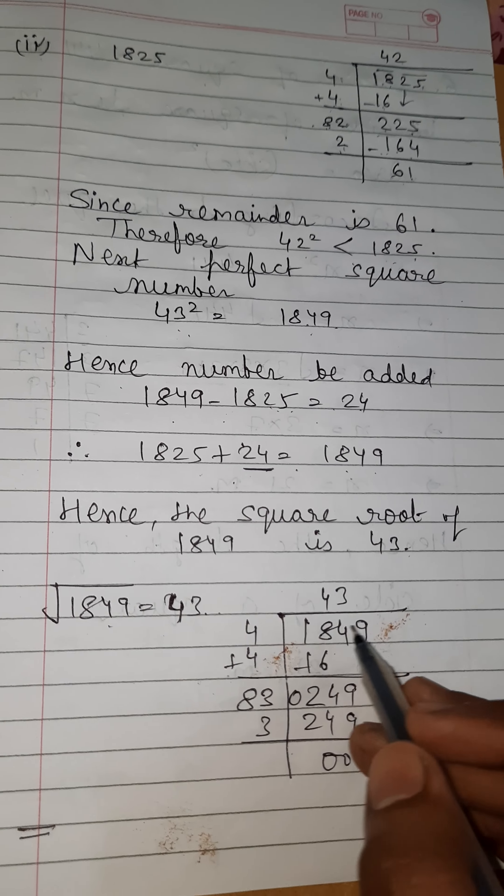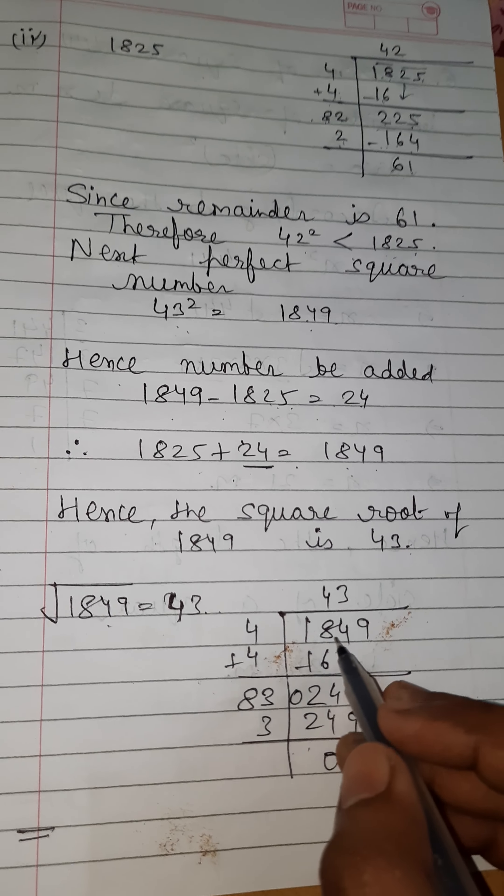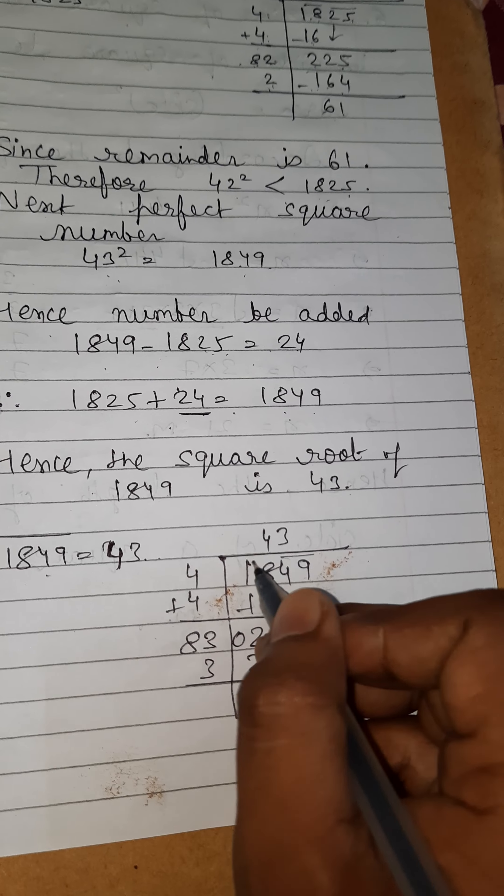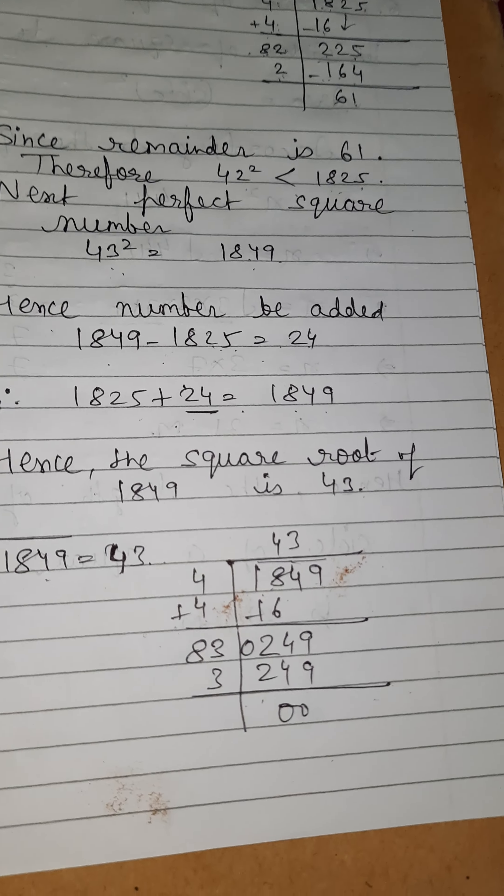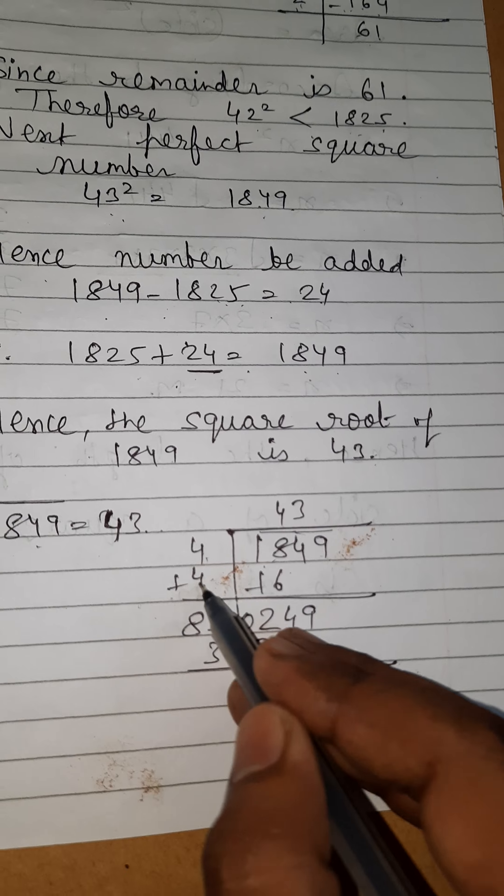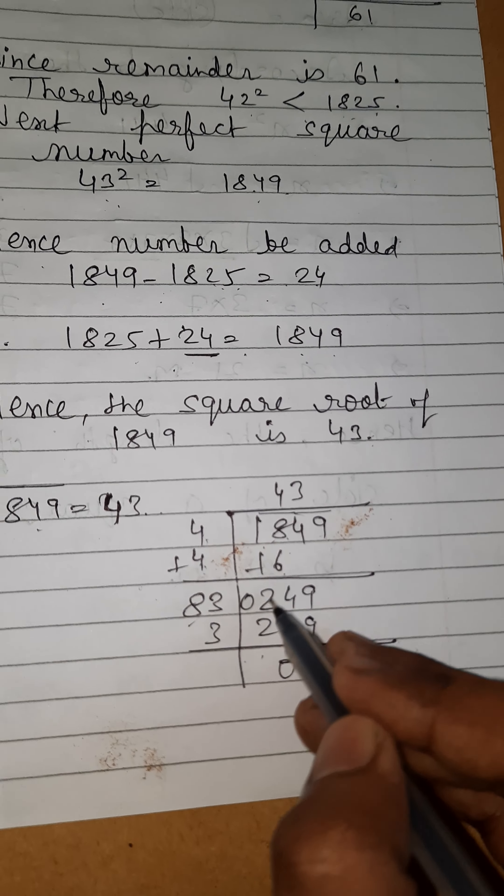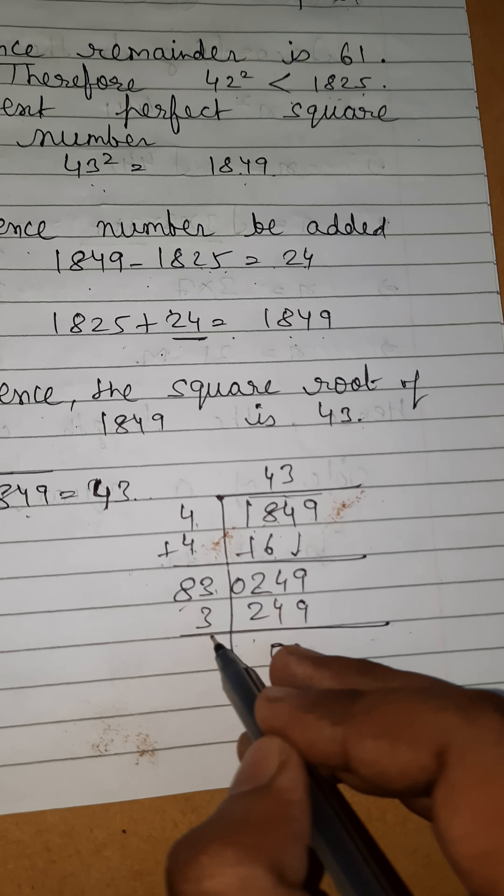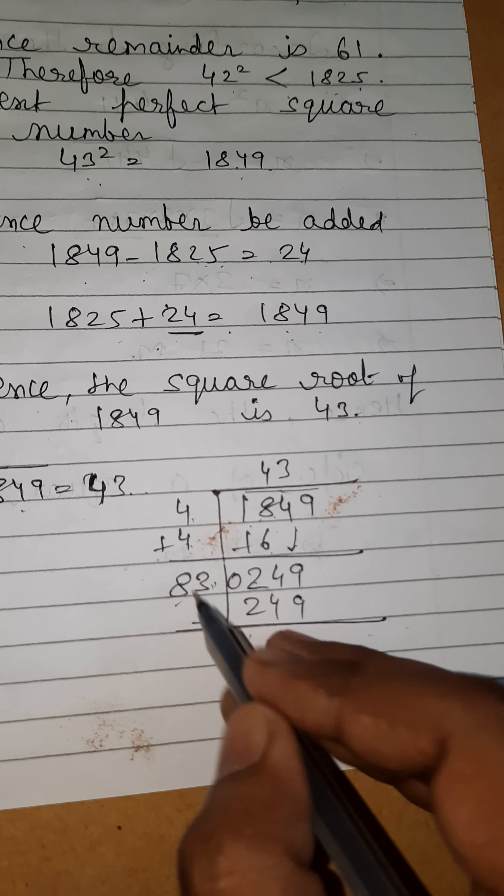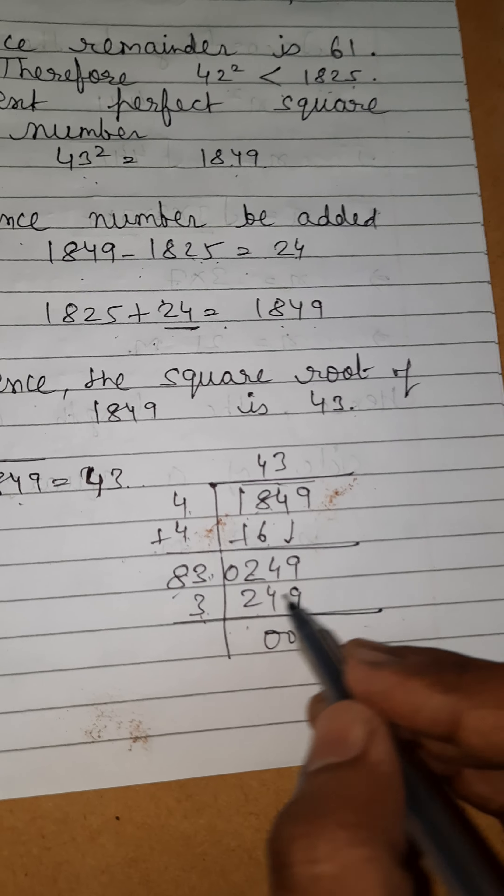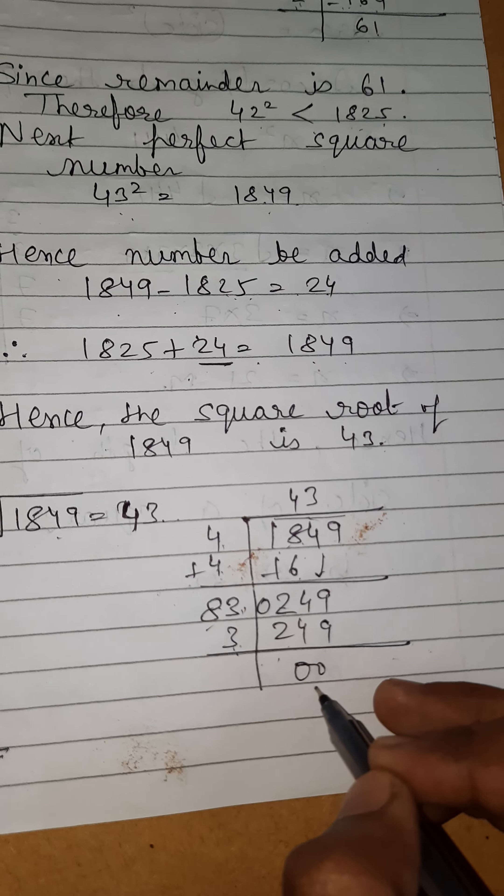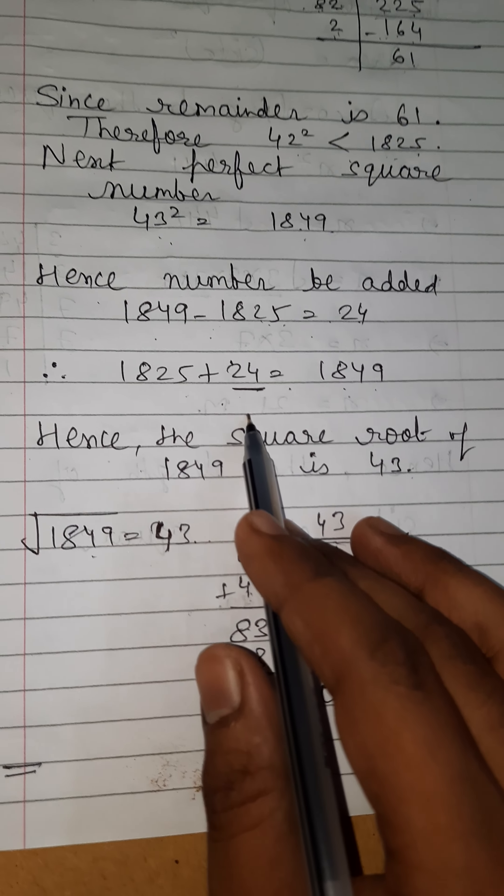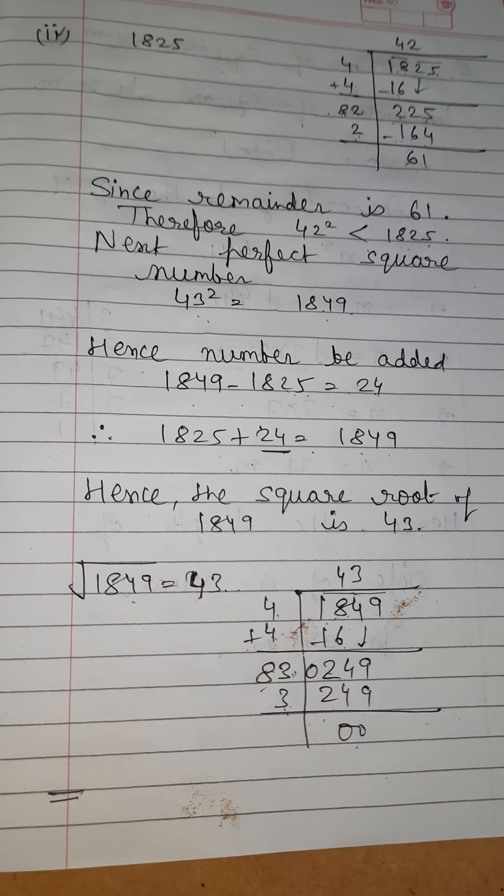Now find the square root of 1849 by division method. First pair is 49 and 18. 4 times 4 is 16, and 4 plus 4 is 8. Now 18 minus 16 equals 2, and 49 brought down is 249. Put 3 here: 3 times 3 is 9, and 3 times 8 is 24, making 249. 249 minus 249 equals 0. So 43 is the answer and the least number is 24. Thank you.